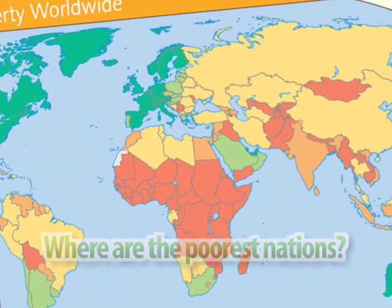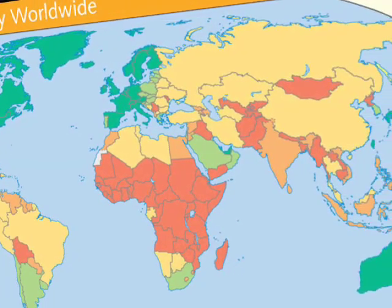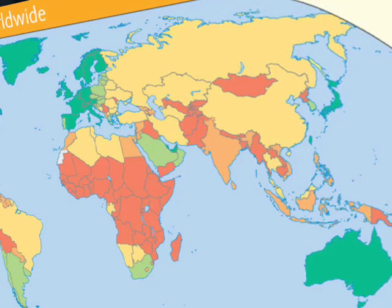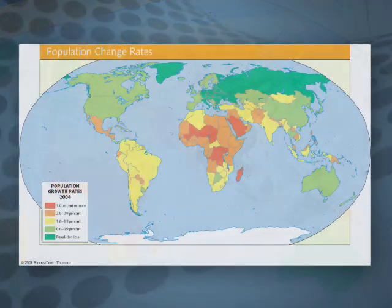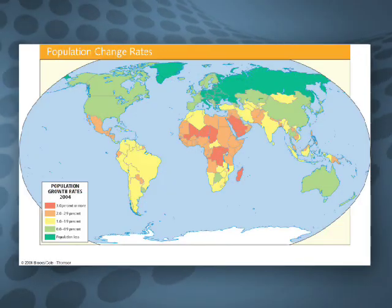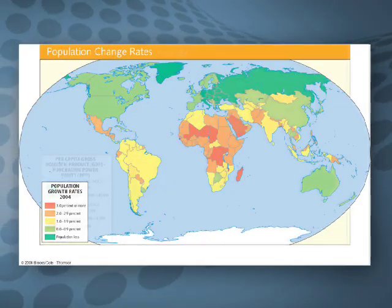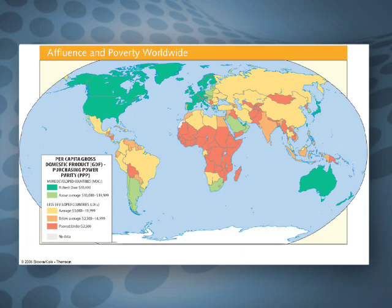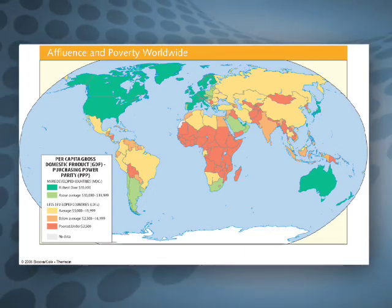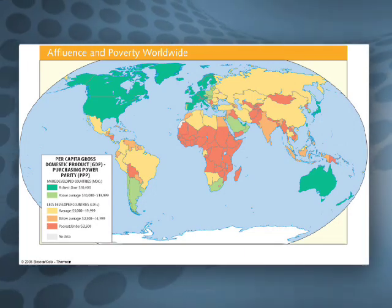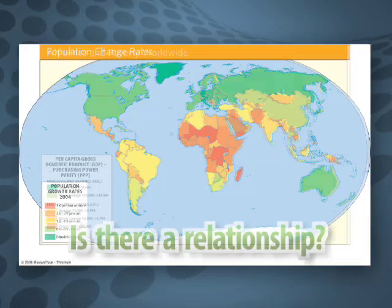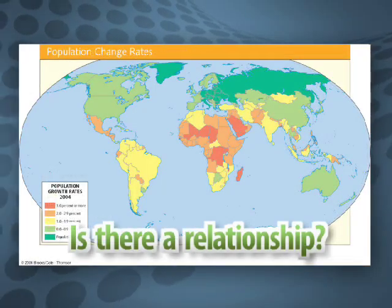Now that you have established the pattern of wealth and poverty on our planet, take a look at population growth rates. By comparing the two maps, identify the relationship between population growth and wealth. Is there a relationship?